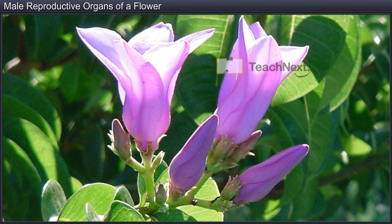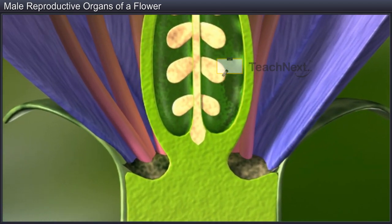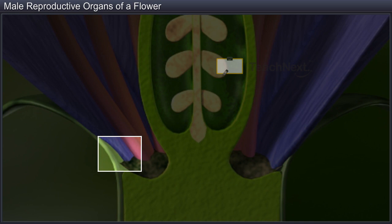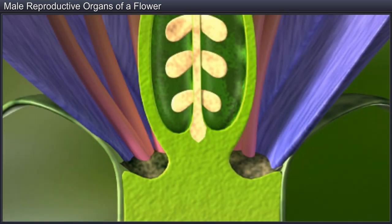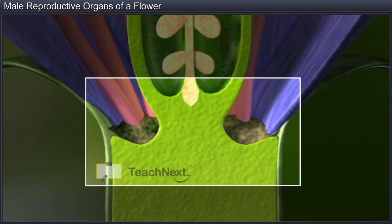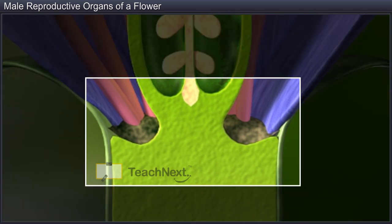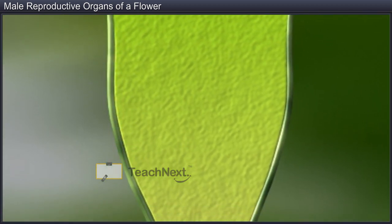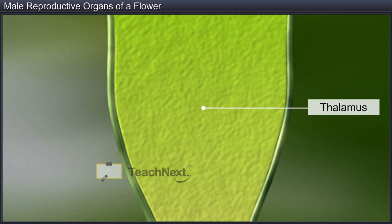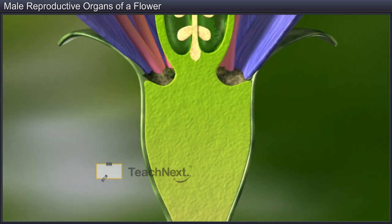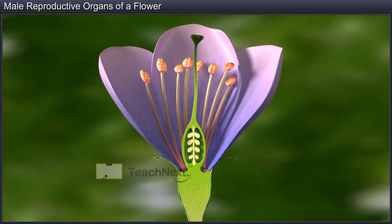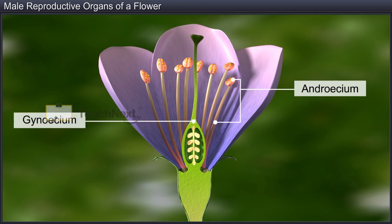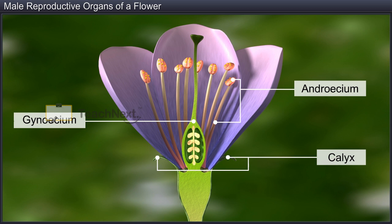The buds bloom into a flower, a modified shoot with shortened inter-nodes and nodes. From these nodes arise four modified leaf-like structures called whorls, which are arranged on the swollen end of a stalk called the Thalamus. The whorls include the Androecium, Gynoecium, Calyx that consists of sepals, and lastly the Corolla comprising the petals.